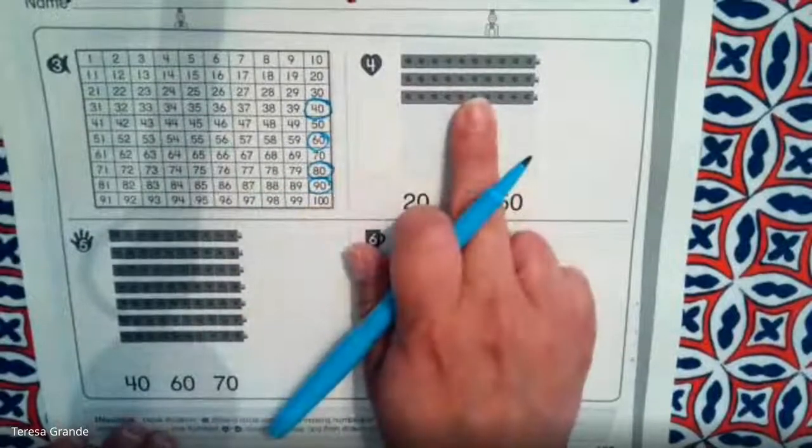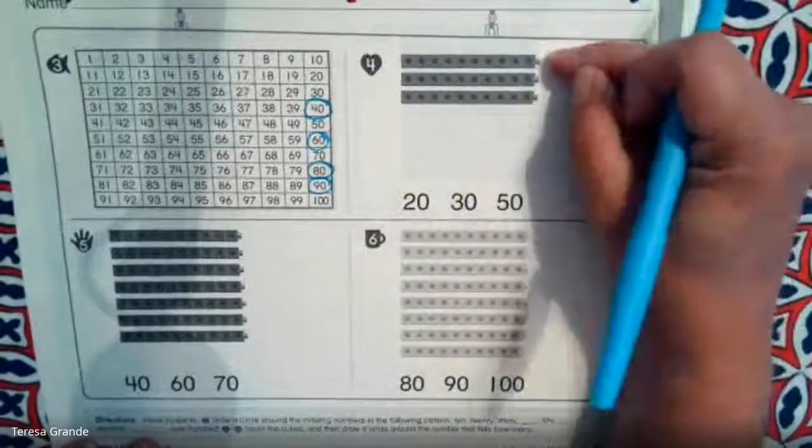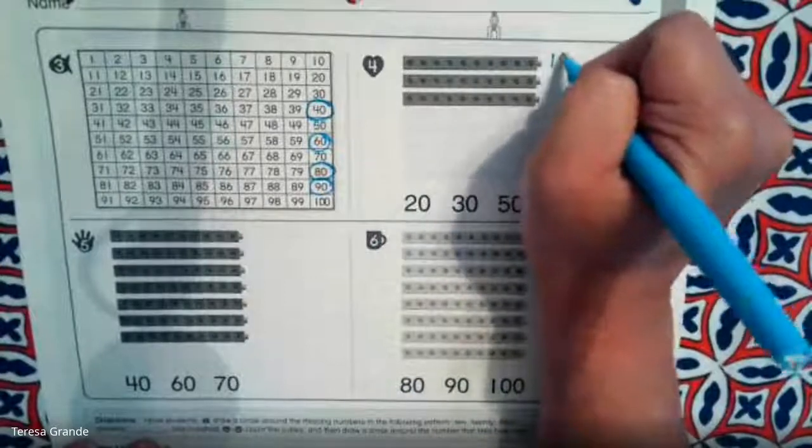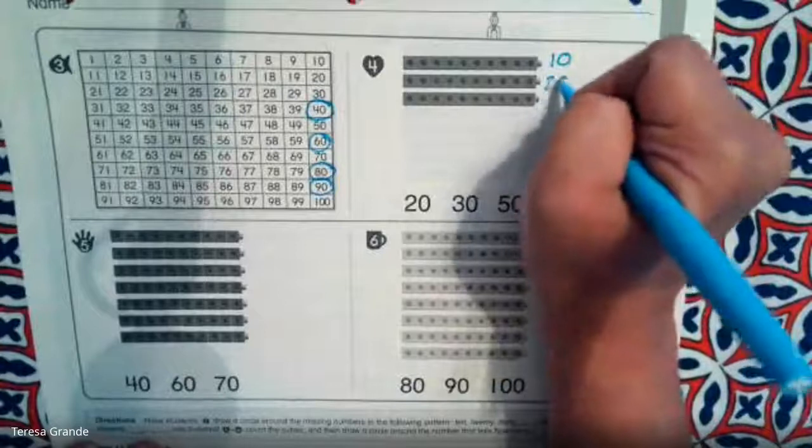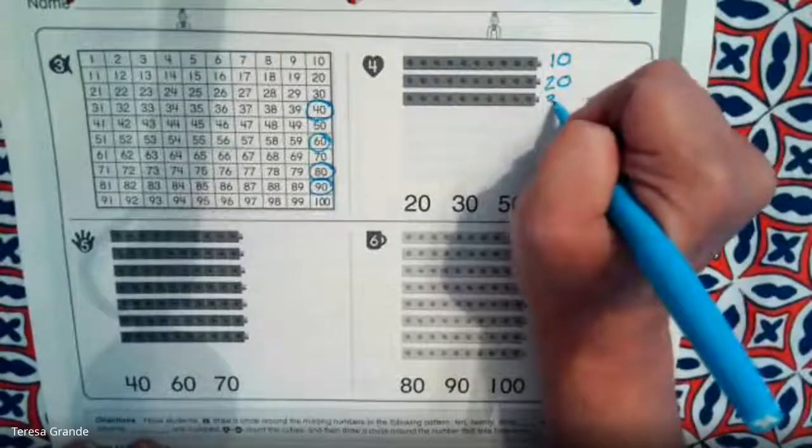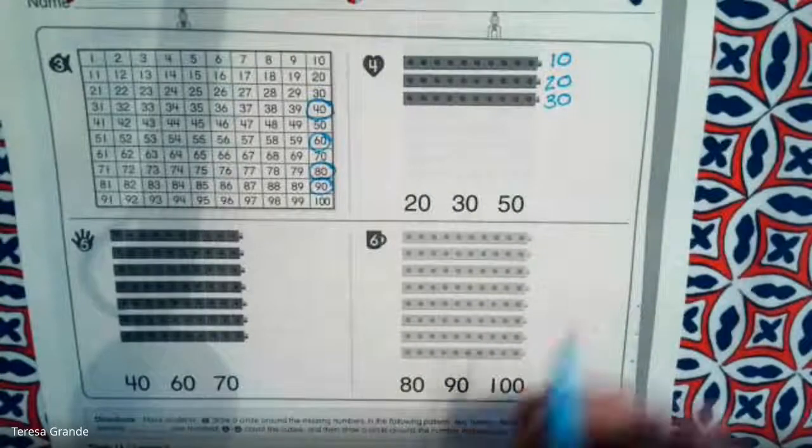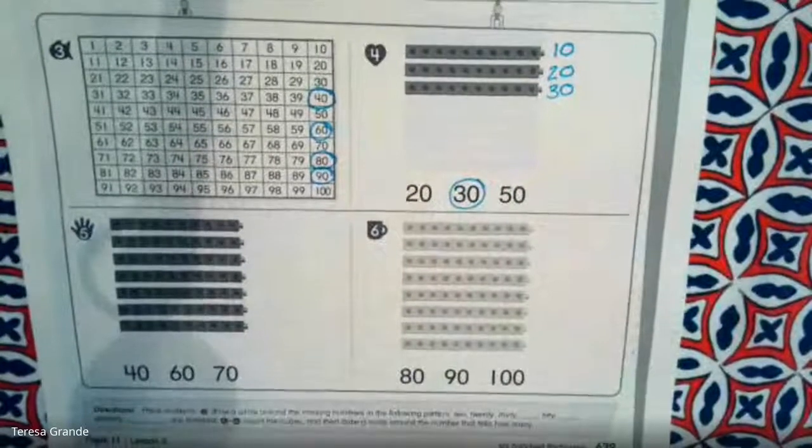Now, let's take a look at our linking cubes. There are 10 linking cubes in each row. So, we have 10. Let's count by 10s. 20, 30. Very good. Which number shows 30? Excellent. This is the number 30.